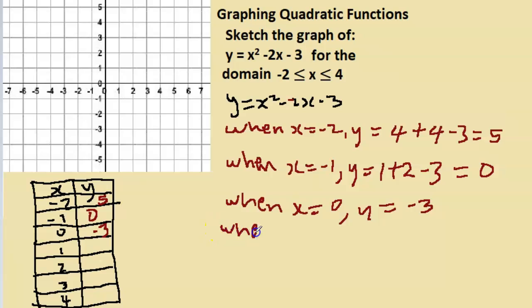When x = 1, y = x², so x² will be 1², 1² is 1, -2 times 1 that's -2, and -3. That works out to be 1 - 2 - 3, that's -4.